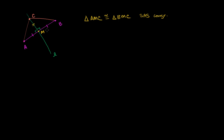And so if they are congruent, then all of their corresponding sides are congruent. And AC corresponds to BC, so these two things must be congruent. This length must be the same as this length right over there. And so we've proven what we want to prove. This arbitrary point C that sits on the perpendicular bisector of AB is equidistant from both A and B. So AC is equal to BC.